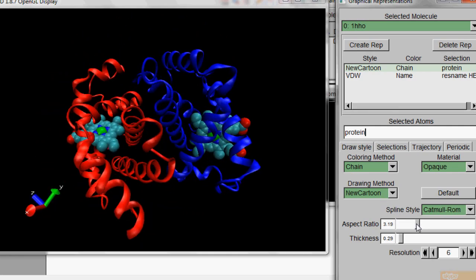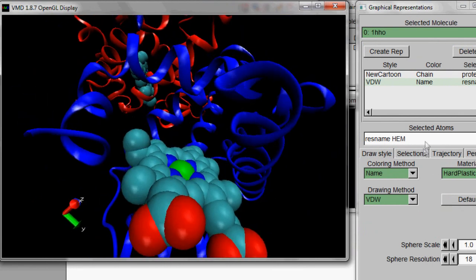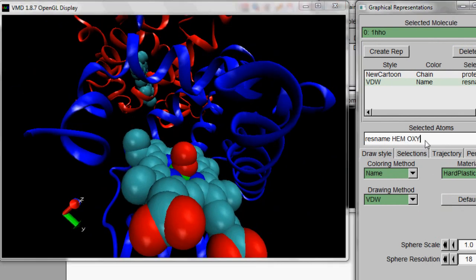Great. So now let's find the oxygen in all of this. So click on the HEM representation and add Oxy to it. Then hit Return. There you go. That's the oxygen.